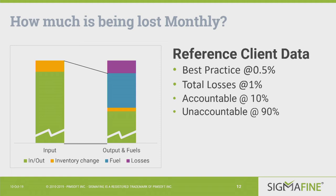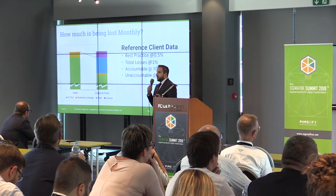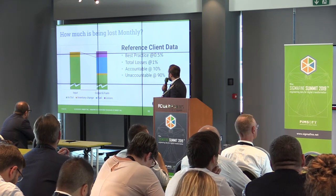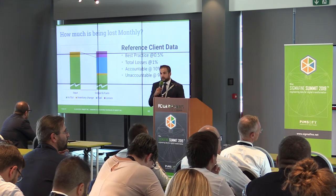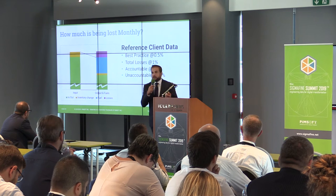In a normal plant we have an average of one percent loss — one percent of your feed becomes losses — and only ten percent of losses are accountable. The other 90 percent are unaccountable: you don't know the source, you don't know where they are, you have no information. So the first scope is to reduce the unaccountable losses in order to have more information, and only with this information can you take action to reduce total losses.